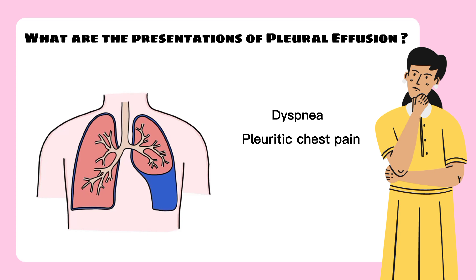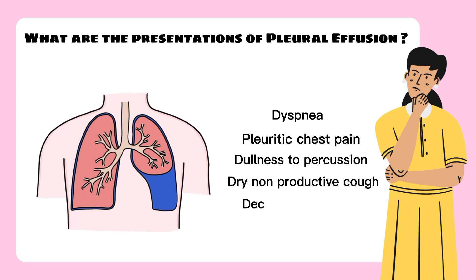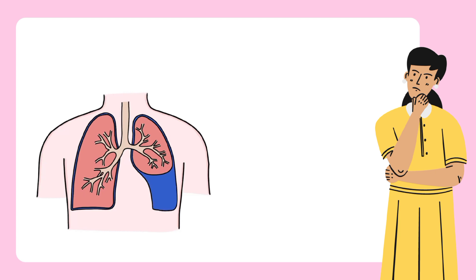The second symptom is pleuritic chest pain. Chest pain occurs because the pleural lining of the lung is irritated. The third one is dullness to percussion — dullness replaces resonance when fluid or solid tissue replaces air-containing tissues, as occurs in pleural effusion — along with a dry non-productive cough and decreased or absent breath sounds. Decreased breath sounds indicate the presence of fluid, as with pleural effusion.